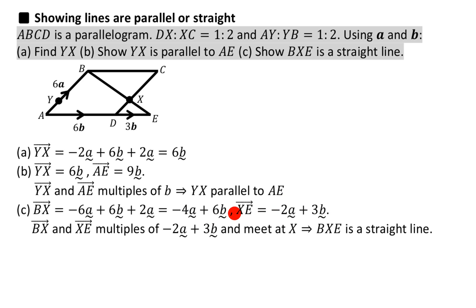So both these vectors, BX and XE, both these lines are made up of the same vector: minus 2a plus 3b. They are both multiples of that.